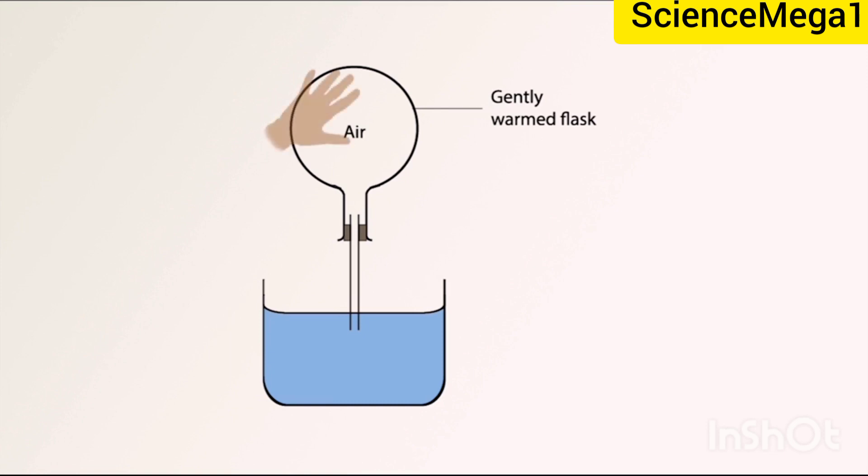When the flask is gently warmed by rubbing the flask with the hand, the bubbles of air are seen in the beaker. This is because our hand is naturally warm, and when it is wrapped on the glass, the friction that occurs between our hand and the glass produces heat, and this causes the bubble of air seen in the beaker. The warmth of the hand is sufficient to cause the air to expand and bubble up through the water.